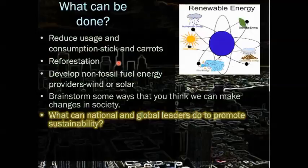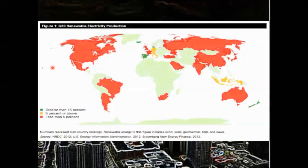Reforestation: obviously we need to plant trees when we cut them down. Trees or biomass can be a renewable resource, but we have to use it responsibly and replace what we remove — otherwise it's not going to be renewable. We need to develop non-fossil fuel energy providers like wind or solar, but we can't use only wind or only solar to replace all the oil we use — we have to have lots of different ways to replace those. Brainstorm ways that we can make changes in society, and what national and global leaders can do to promote sustainability. Ultimately, you are involved in the global and political scale because you vote. Eventually, when you get old enough, you're going to vote for candidates that have the same level of concern about the planet, because we want you and your kids and your kids' kids to have a clean living.